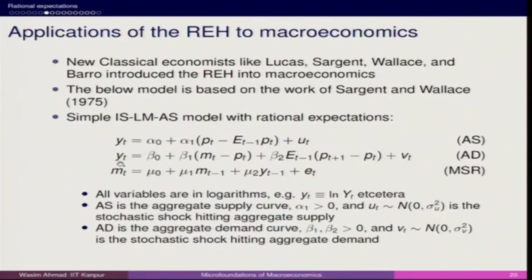Yt here has money supply minus the current price, and the role of expectation — how price changes augment investment in the economy, further creating growth scenarios. This mentions the real balance effect. For the money supply: Mt equals mu 0 plus mu 1 times Mt minus 1, plus mu 2 times Yt minus 1, plus Et.